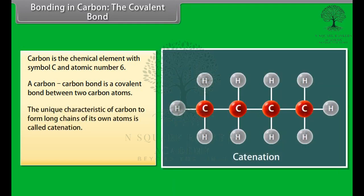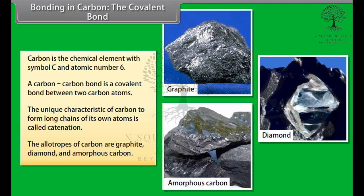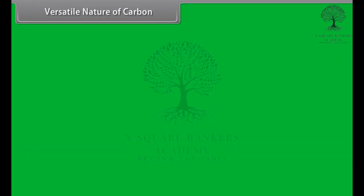Carbon also has the unique characteristic to form long chains of its own atoms. This property is called catenation. The allotropes of carbon are graphite, diamond, and amorphous carbon.